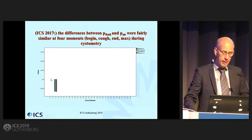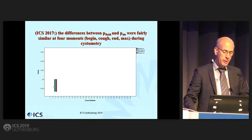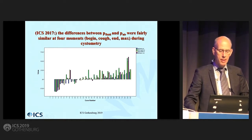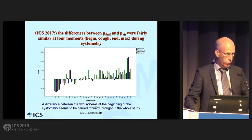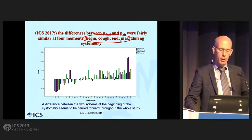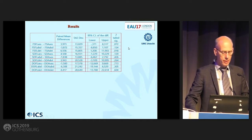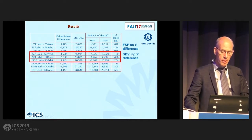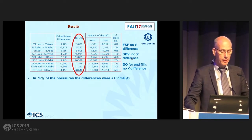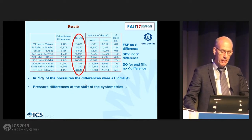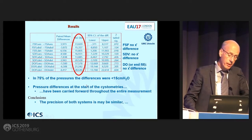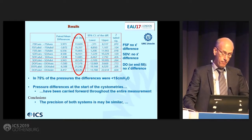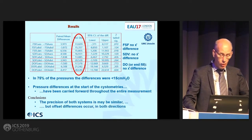Here is one patient: begin, cough, end. If you begin with a negative pressure difference, that is carried forward to the end of the cystometry. These are all the patients — if you begin positive, you end positive in the cystometry. So it seems the differences are carried forward throughout the whole study. I used Urolog London to show a few other moments in the cystometry, and basically the same effect. There are differences, not frequently large, but at the start of the cystometry the differences were carried forward throughout the entire cystometry. So the precision of both systems may be similar, but the offset differences occur.